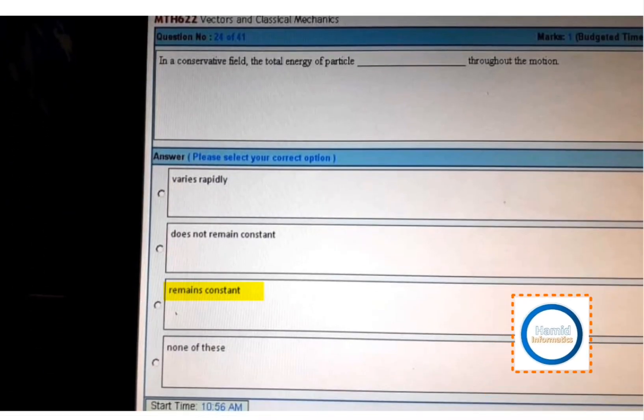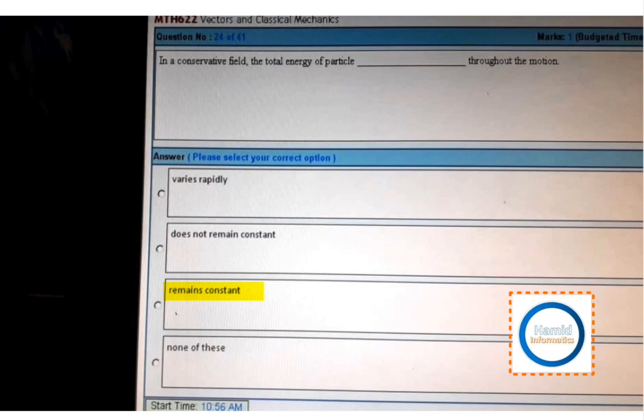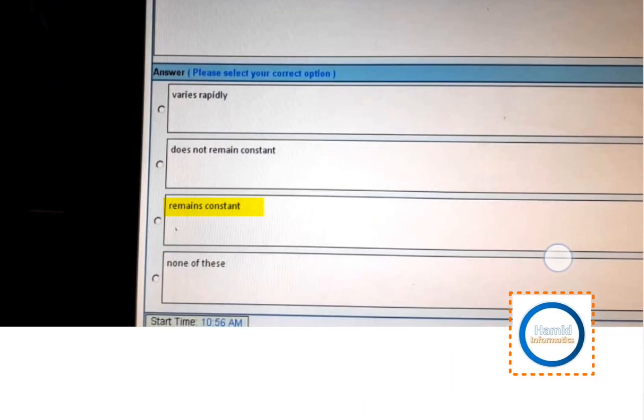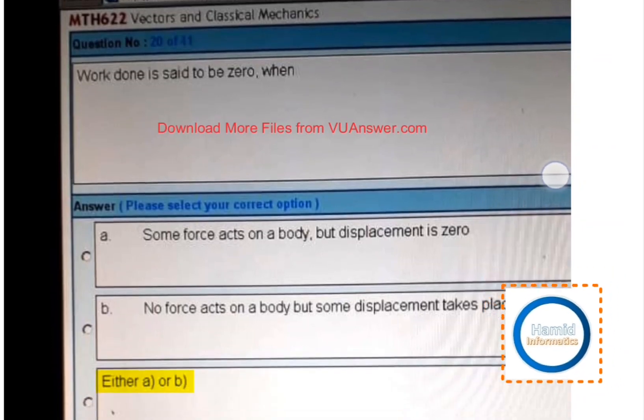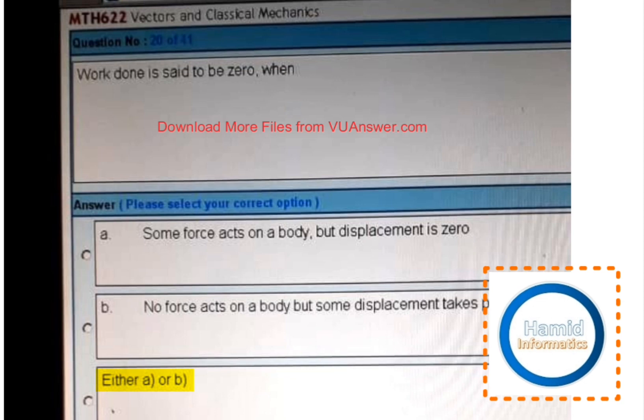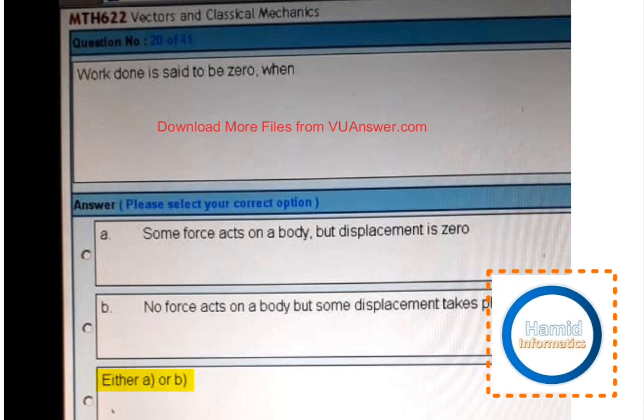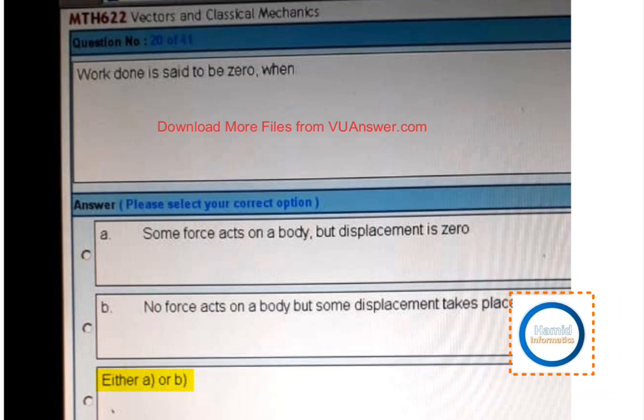In a conservative field, the total energy of a particle throughout the motion remains constant. Work done is said to be zero when either: some force acts on a body but displacement is zero, or no force acts on a body but some displacement takes place.